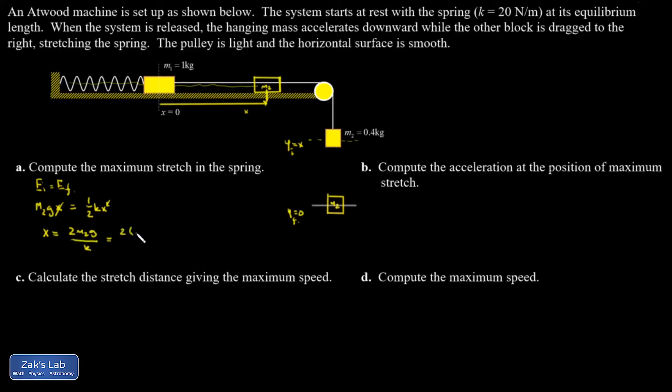Plugging in the value of m2. And g is 9.8. And dividing by k, which we're told is 20 newtons per meter, I get 0.392 meters. Or it might be nice to write that as 39.2 centimeters.